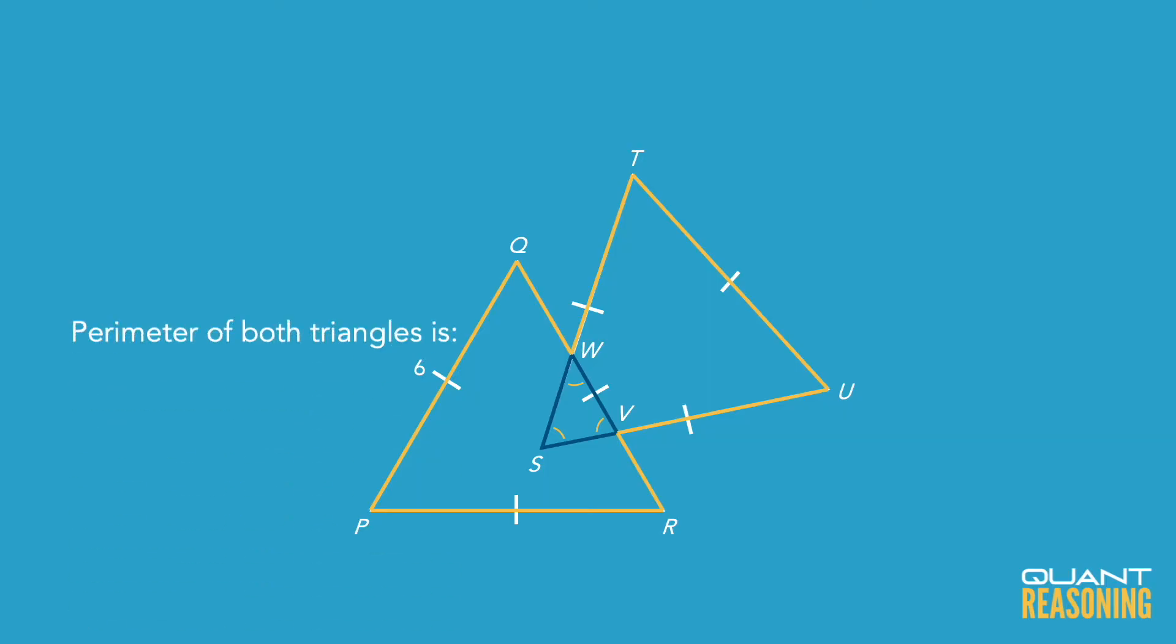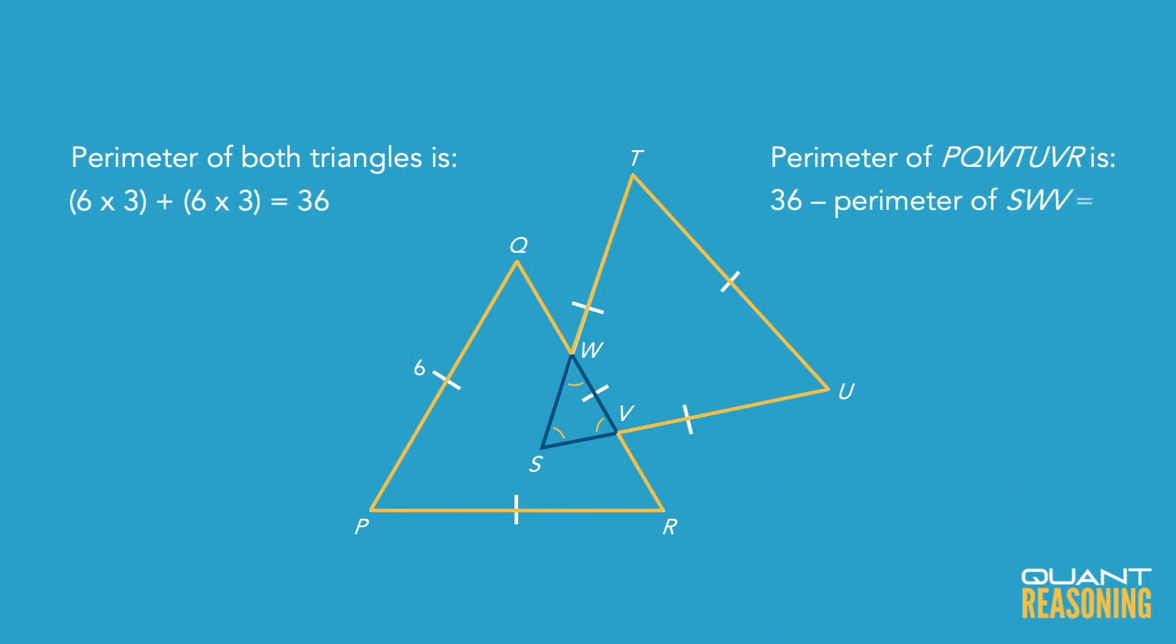So if we could just find that perimeter of that small overlapping triangle and subtract that from the sum of the two perimeters of the two big triangles, that would give us the answer.